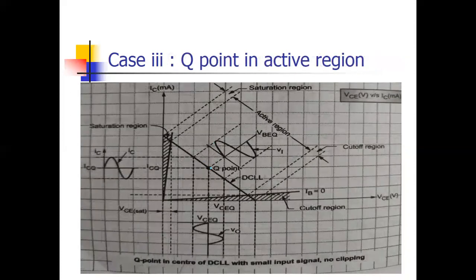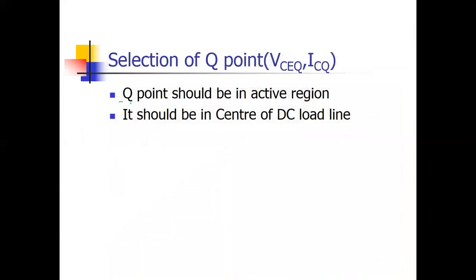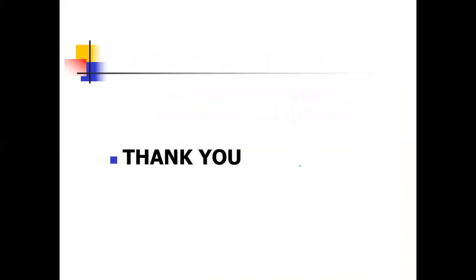The ideal choice is to place the Q point in the active region, at the center of the DC load line. When we draw the input voltage, output voltage, and output current waveforms in this case, both the positive and negative peaks are fully preserved — there is no clipping at all. Therefore, the Q point should be in the active region and centered on the DC load line.